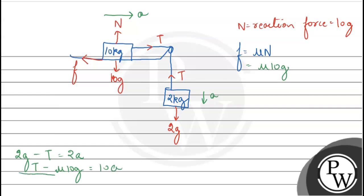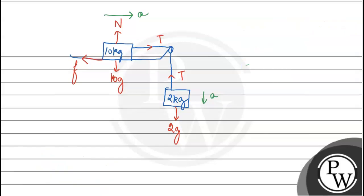Adding these equations, tension cancels out. It remains 2g - μ10g = 12a. Now let's substitute the values.